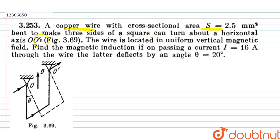It can turn about a horizontal axis. The wire is located in a uniform vertical magnetic field. We have to find magnetic induction if on passing current I is equal to 16 ampere through the wire, the wire deflects by an angle theta is equal to 20 degree.